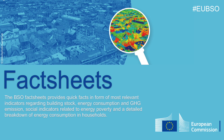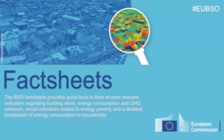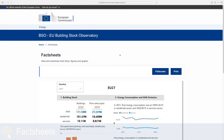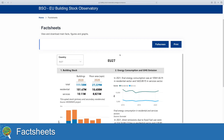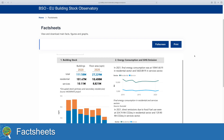The BSO Fact Sheets provides quick facts in the form of the most relevant indicators regarding building stock, energy consumption and GHG emissions, social indicators related to energy poverty, and a detailed breakdown of energy consumption in households.